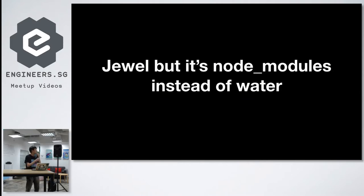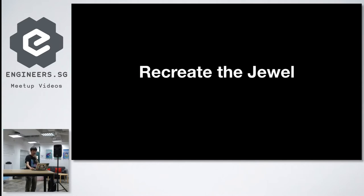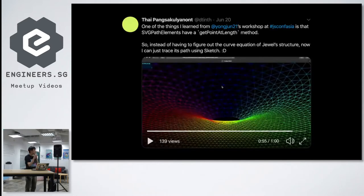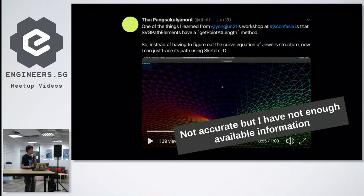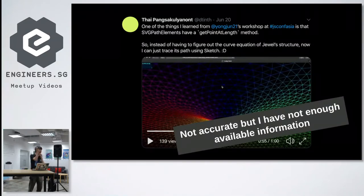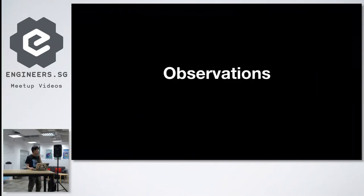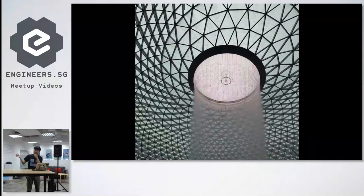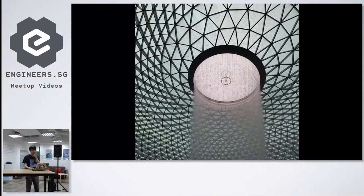So that's the motivation for this project. I want to create the Jewel Vortex, but with node modules instead of water. I actually tried to do that last time, but I didn't have enough information because I was already back in Thailand. So when I came back here, I observed a lot of things about this building.